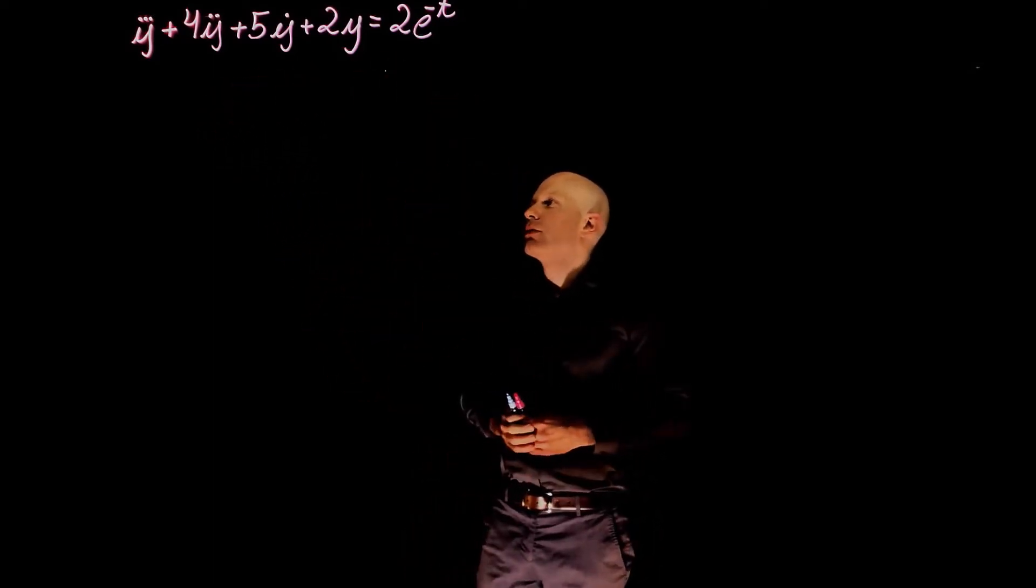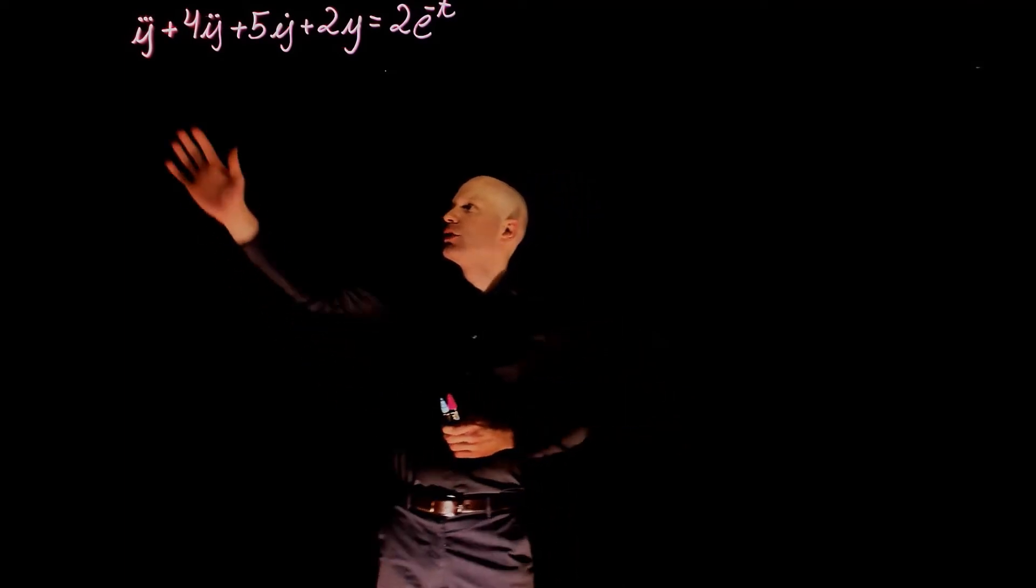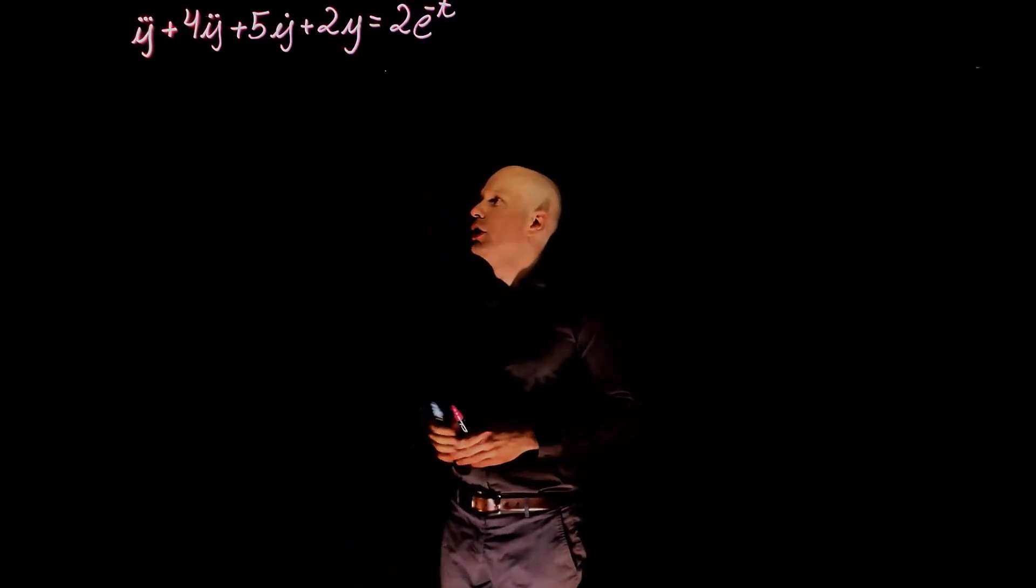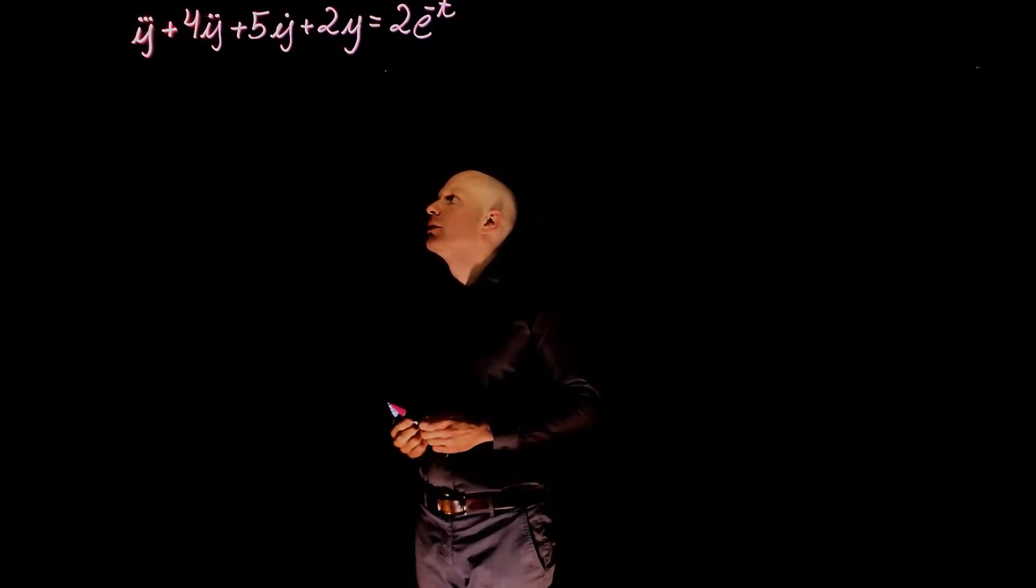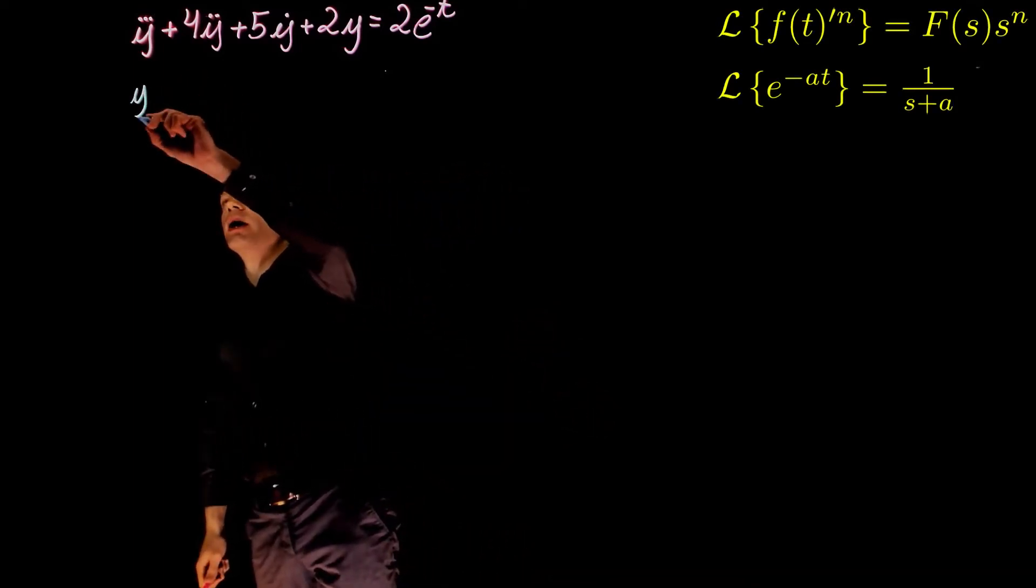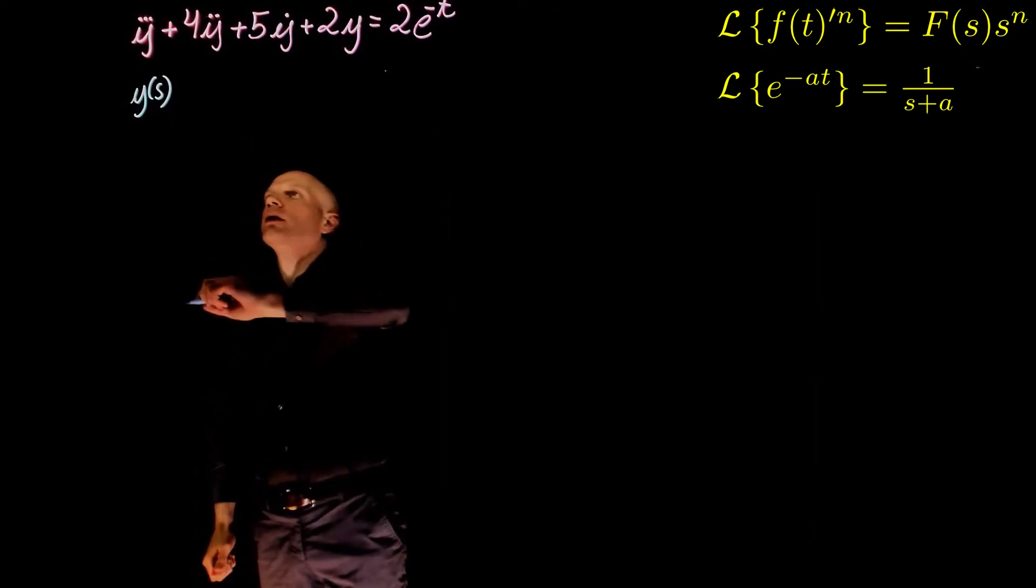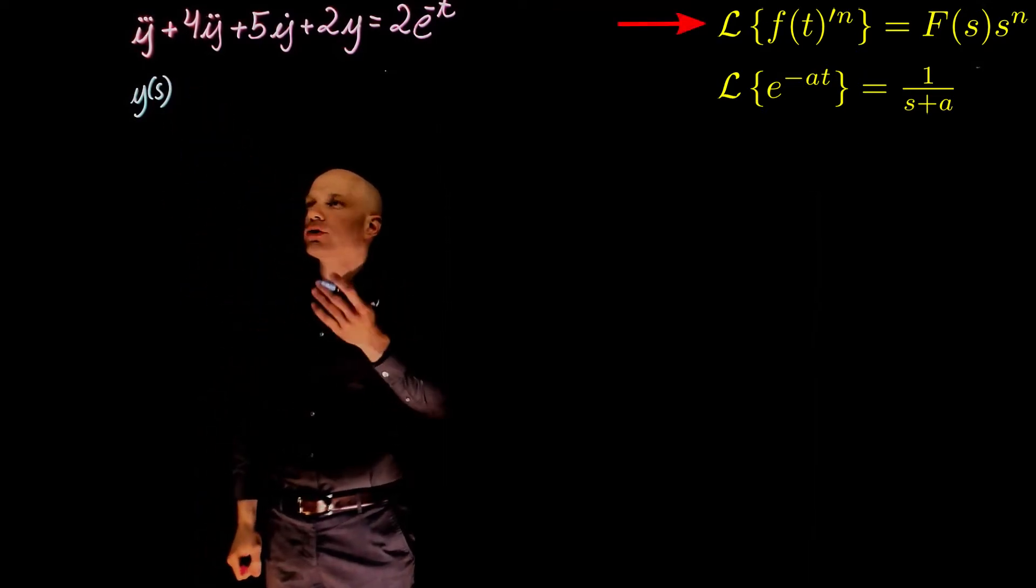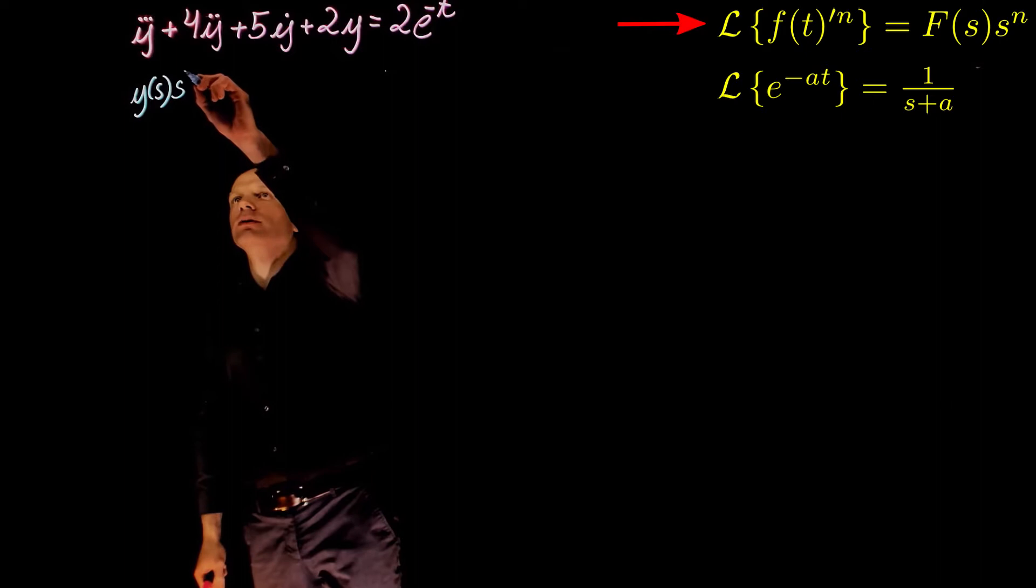Let's go ahead and take the Laplace transform on both sides of this equation, starting with the first term, y triple dot, or the third derivative of y. y(t) becomes y(s), and the third derivative, the Laplace transform of the third derivative, is s to the power of 3.